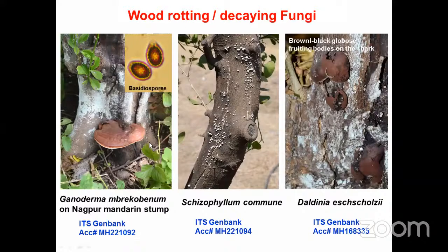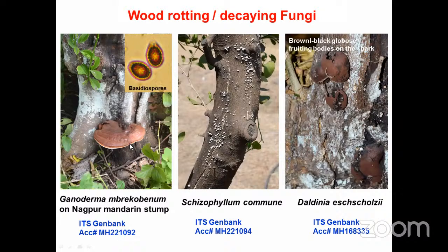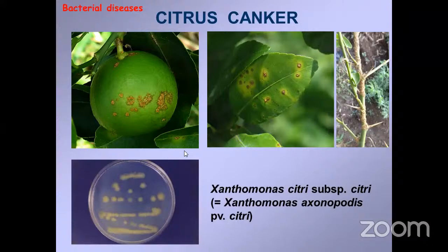Wood rotting fungi including Ganoderma, Daldinia, and various other wood-rotting species can be seen in some parts of Andhra Pradesh, even in old senile orchards. For management, mechanically remove the fungal growth and apply Bordeaux paste and copper fungicide over the exposed area. Now moving to fungal diseases, I will describe some important bacterial infections.